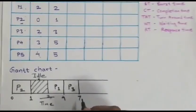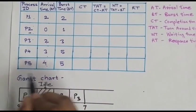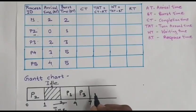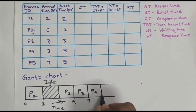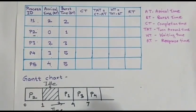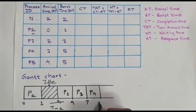Now P3 has been terminated. Now 2 processes remaining. Check out the arrival time. This one is less, P4. So P4 would be there. P4 takes 5 units of time. 7 plus 5 is equal to 12.